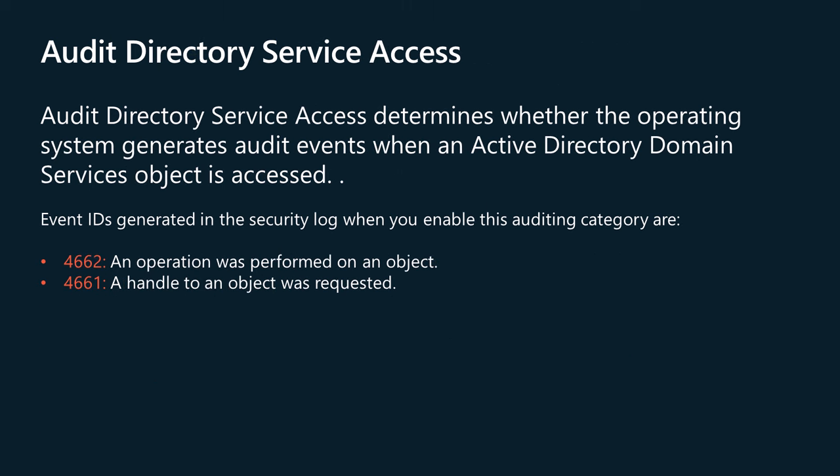Audit Directory Service Access determines whether the operating system generates audit events when an Active Directory domain services object is accessed. Whilst it is generally better to track changes to Active Directory objects through the Audit Directory Service Changes policy, events related to that policy do not give you information about failed access attempts. For this reason, Microsoft recommends failure auditing with Audit Directory Service Access so you can track failed access attempts to Active Directory objects.